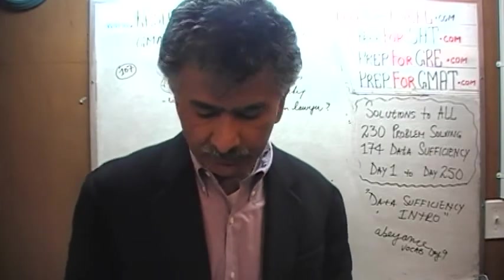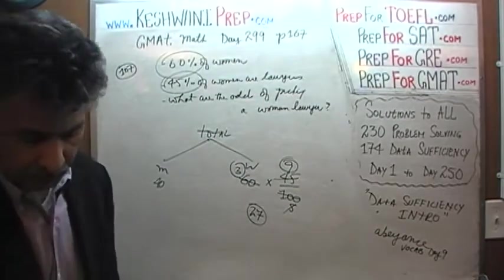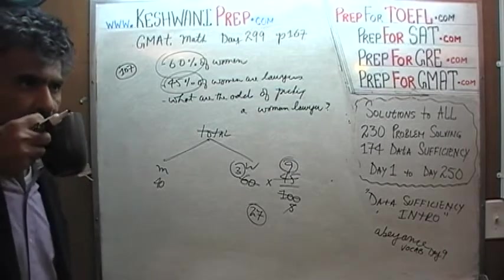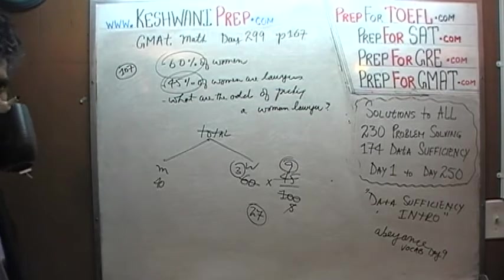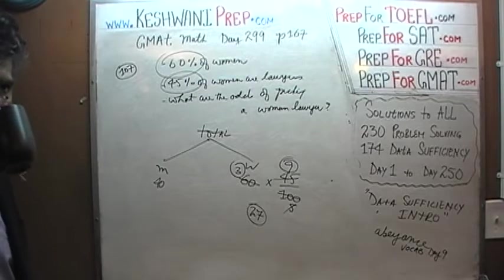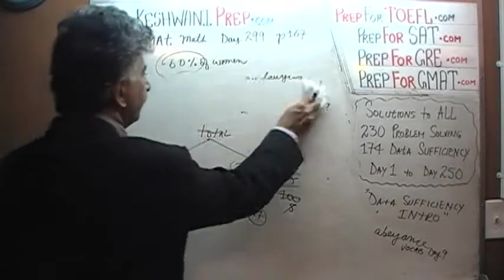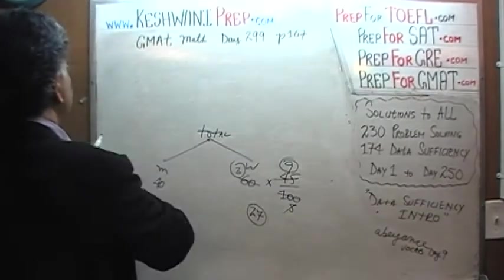It turns out that the odds of picking a female lawyer from this particular group is 27%, a little over a quarter of a chance. Let's do the next one, number 108. Number 108 is a little bit more involved, it's not as straightforward as this one.